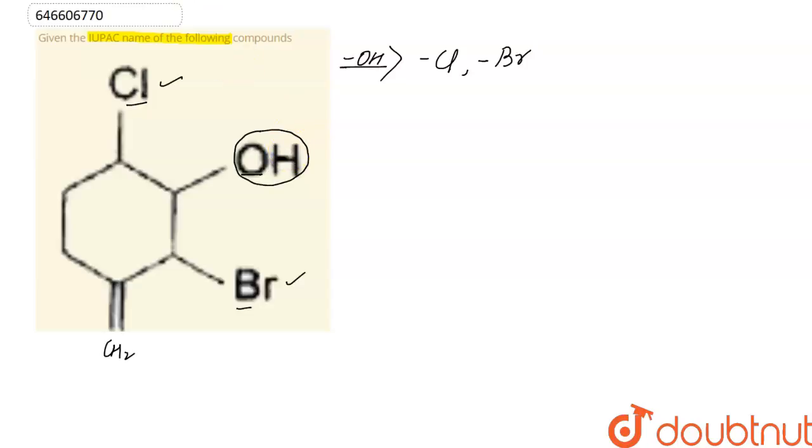We will start numbering the carbon atoms according to numbering rules. Functional groups have more priority over substituent groups, meaning we provide lower position to the functional group. This is carbon number one, two, three, four, five, and six. On second, third, and sixth carbon we have substituent groups.